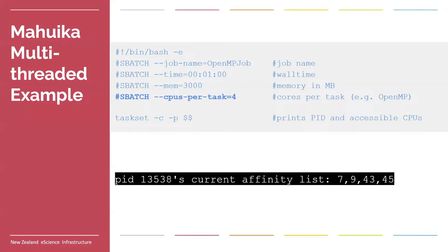But just because the job has access to multiple CPUs doesn't mean they are able to be used. Generally, within your script, you'll have to explicitly utilize these extra CPUs. How this is done is dependent on what software you're using. Some software can automatically detect the extra CPUs and you'll perhaps only have to use special parallel commands, while other softwares, especially more low-level compiled softwares like C, you'll have to explicitly break up and assign your work to CPUs. You'll need to learn how to do this for your chosen software, though we have support pages for many software packages. If you're still having trouble, don't hesitate to contact us.